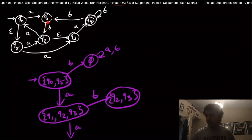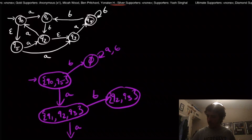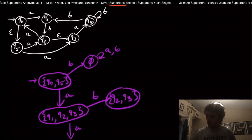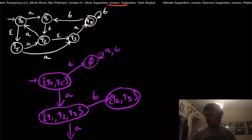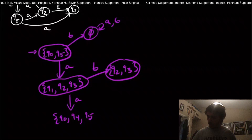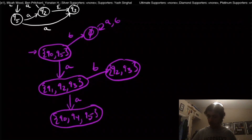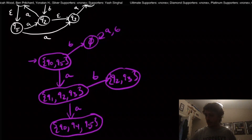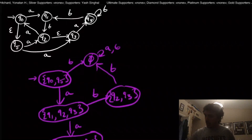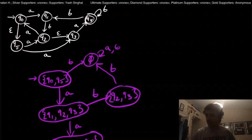On input A from {q1, q2, q3}: q1 goes nowhere on A. q2 goes to q0 on A. q3 goes to q4 on A. But now q0 has this epsilon transition down to q5, so we have to take that into account. So the resulting state is {q0, q4, q5}. The {q2, q3} state's A transition leads to {q0, q4, q5} because of that epsilon closure.